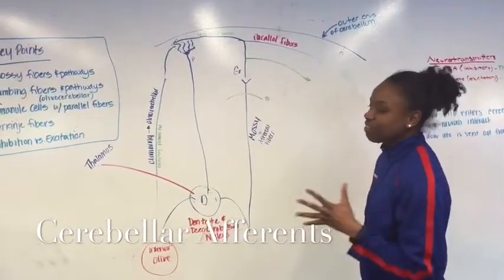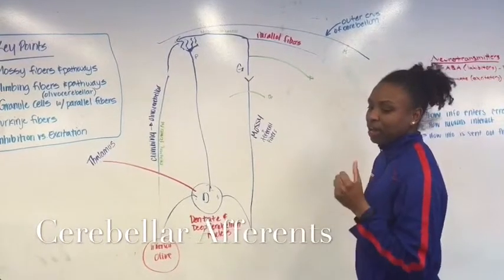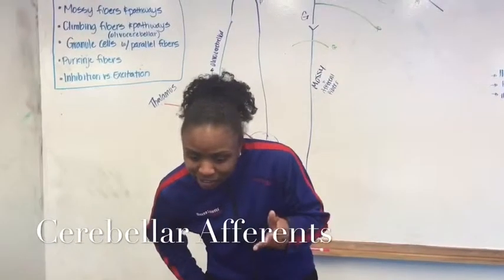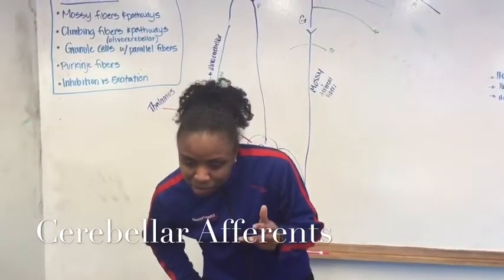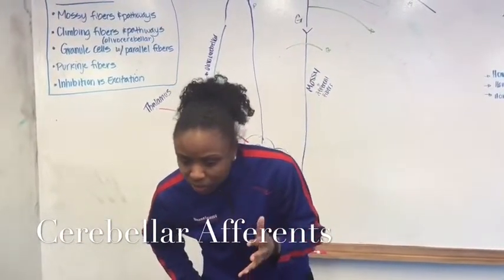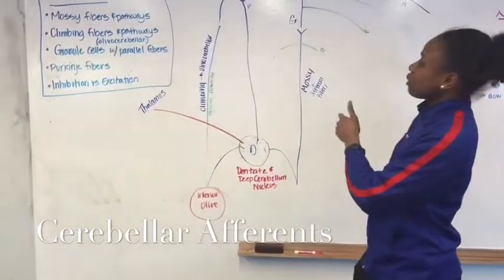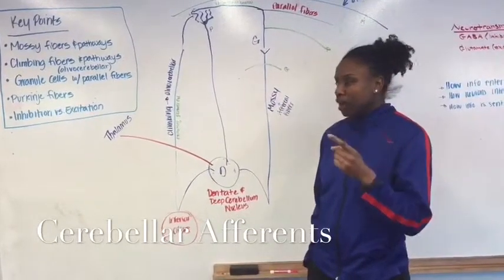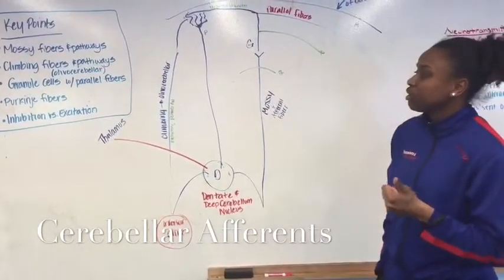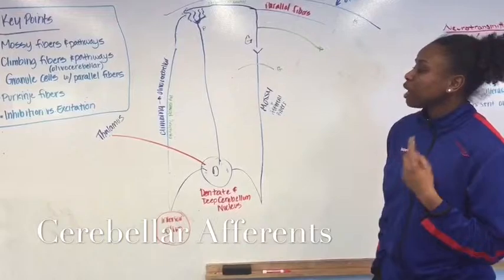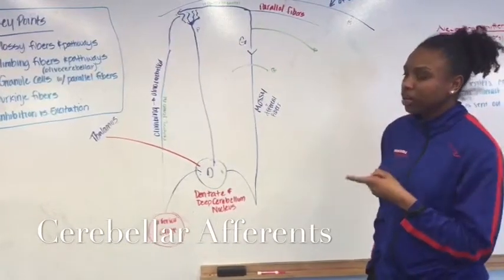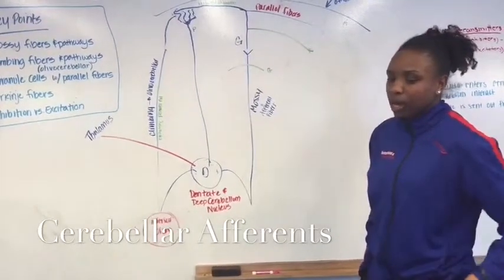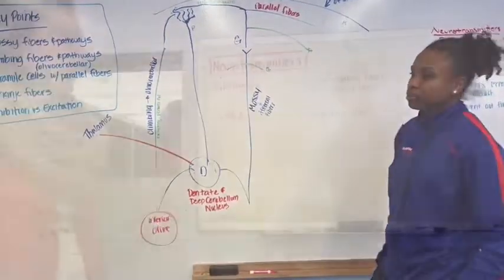There are five mossy fibers: pontocerebellar, reticulocerebellar, raphecerebellar, hypothalamocerebellar, and ceruleocerebellar. We already talked about olivocerebellar, which was associated with the climbing fibers. And then we have four spinocerebellar fibers, which are anterior and posterior spinocerebellar, cuneocerebellar, and rostral spinocerebellar. And those are all the cerebellar afferents.